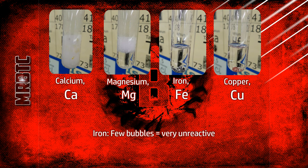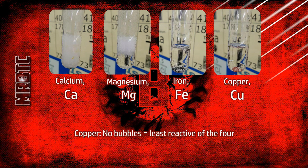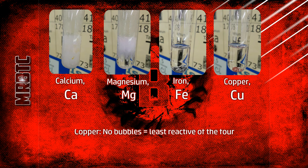Iron appears unreactive — it's still reacting because there are a few bubbles on the surface, but compared to the other two it is very unreactive. Finally, copper is completely unreactive: there are no bubbles on the surface and it is the least reactive of the four.